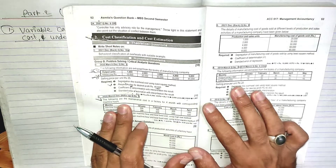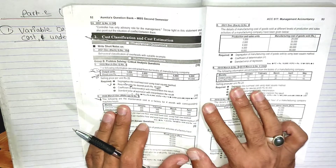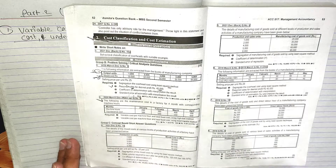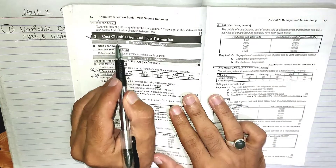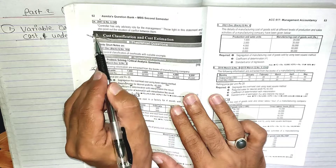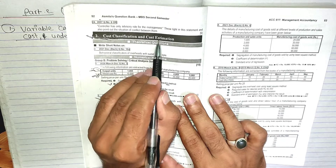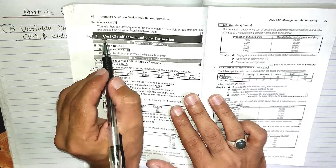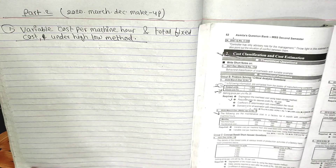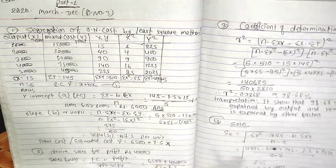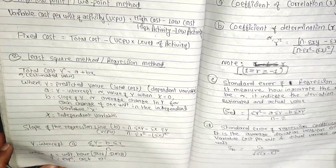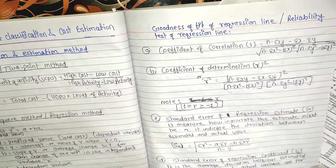Hello and welcome to the S-Secret Education YouTube channel. This is the S part of the MBS second semester, management accounting subject. Chapter 2 is Cost Classification and Cost Estimation, Part 1.